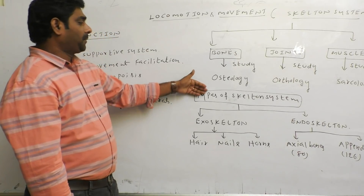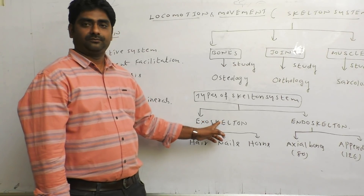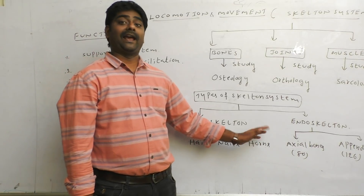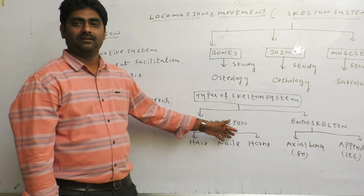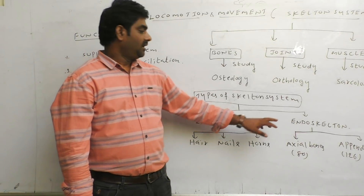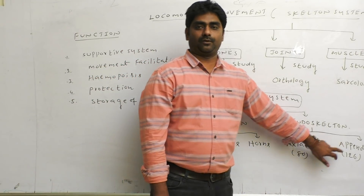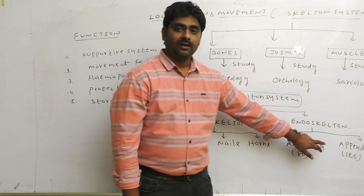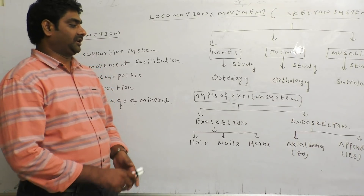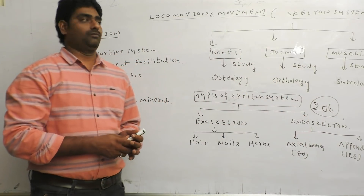Types of Skeleton System — there are two types. Exoskeleton System, which contains nails, animal horns, and similar structures. Endoskeleton System, which is divided into Axial Bones (80) and Appendicular Bones (126), giving a total of 206 bones in our body.